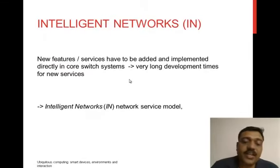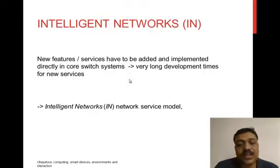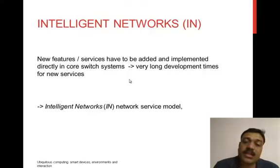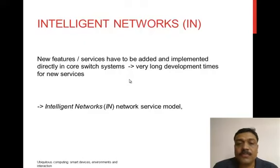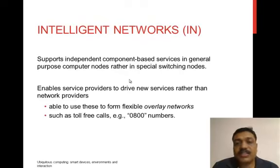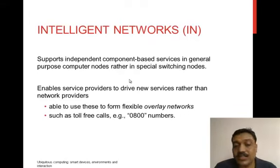The second type is the Intelligent Network. Earlier digital telecommunication networks were designed to support specific services using specialized logic and switching network elements. The intelligent network service model was standardized by ITU-T to offer value-added and customized voice services, such as reverse billing, toll-free numbers, and call waiting. This model supports independent component-based services on general-purpose computer nodes rather than special switching nodes, enabling service providers to deliver new services.